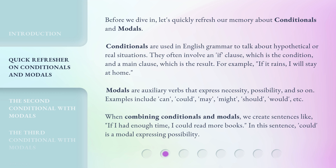Before we dive in, let's quickly refresh our memory about conditionals and modals. Conditionals are used in English grammar to talk about hypothetical or real situations. They often involve an if clause, which is the condition, and a main clause, which is the result. For example: if it rains, I will stay at home. Modals are auxiliary verbs that express necessity, possibility, and so on. Examples include: can, could, may, might, should, would, etc.